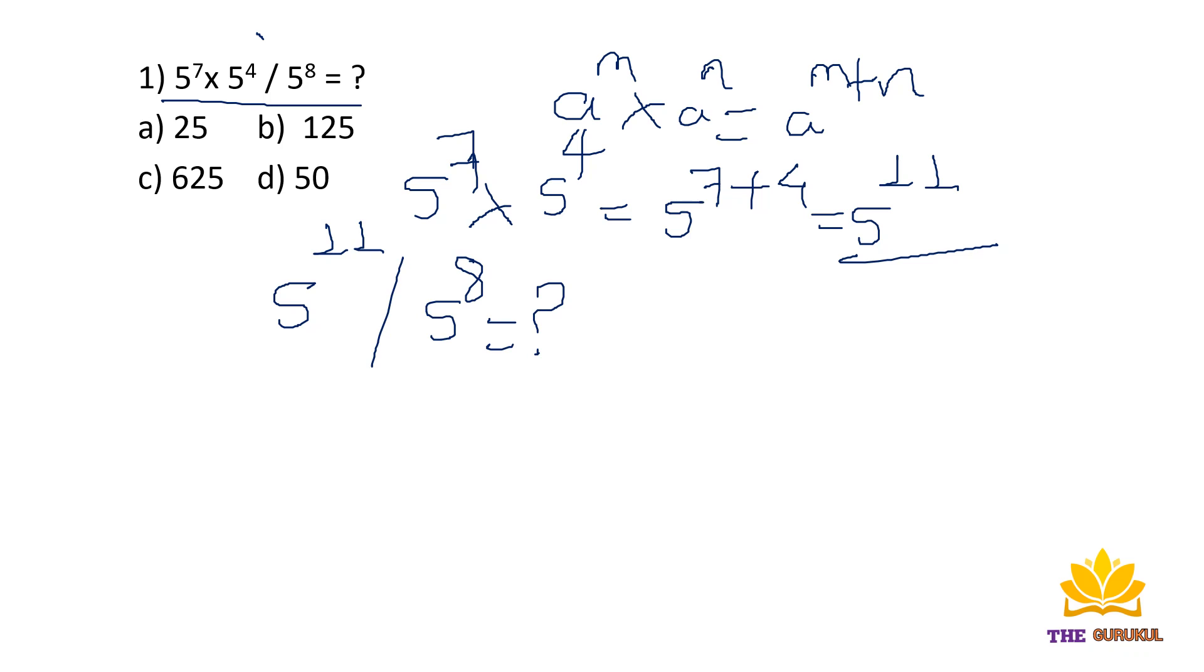Now what will happen? 5 raised to 11 divided by 5 raised to 8. Now we will have a second rule: a raised to m divided by a raised to n equals a to the power m minus n.